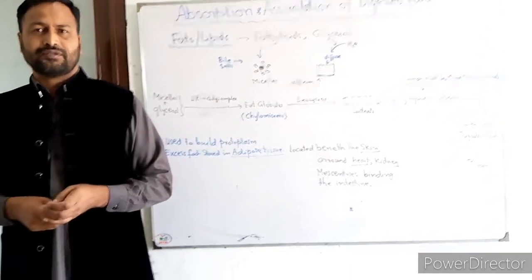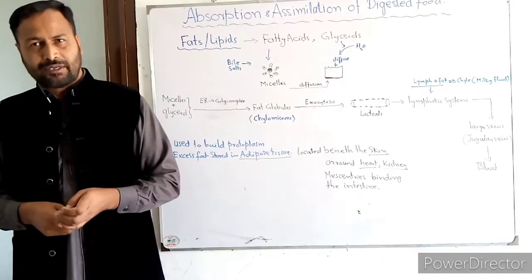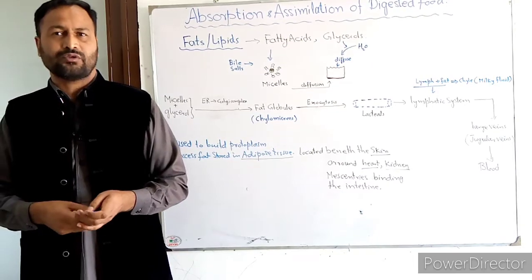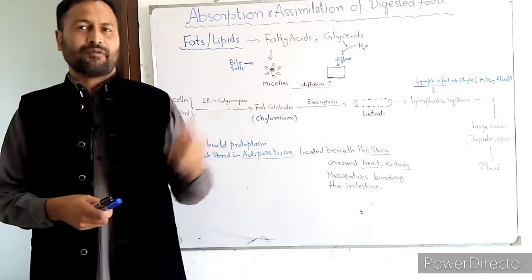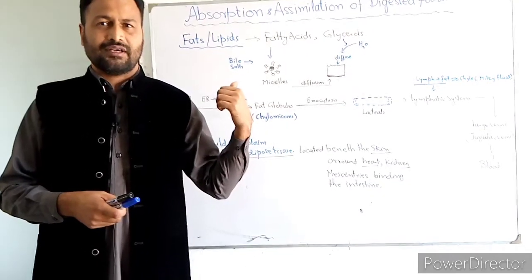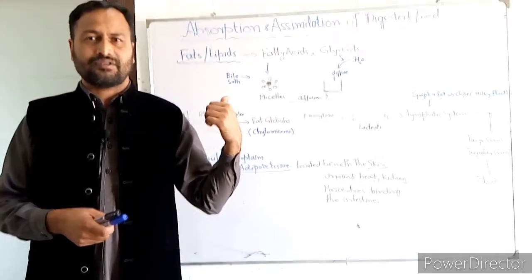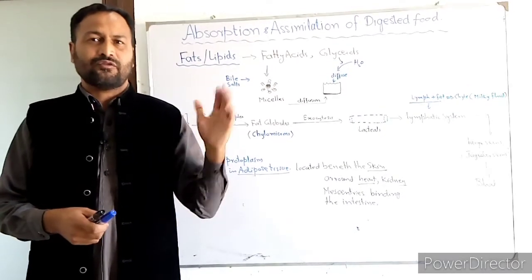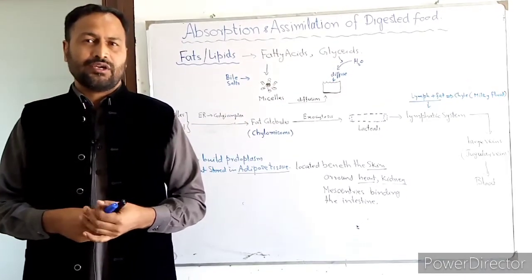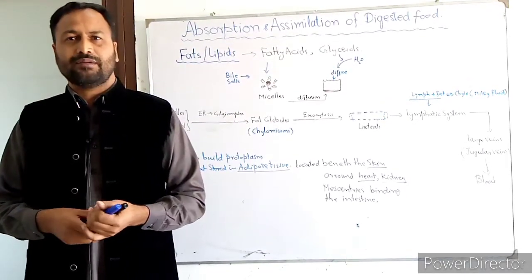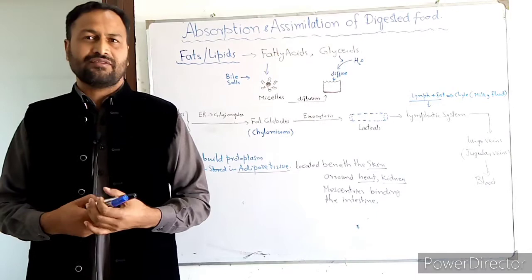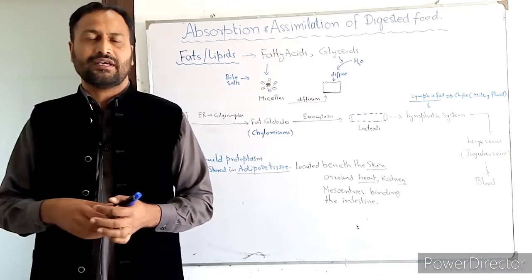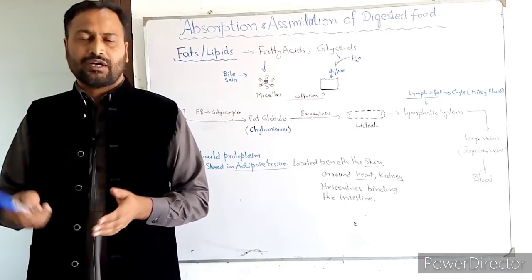This completes the absorption and assimilation of digested food. We must remember that fat travels via the lymphatic system before entering the blood, while other nutrients like monosaccharides and amino acids go directly into the blood.